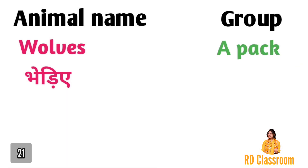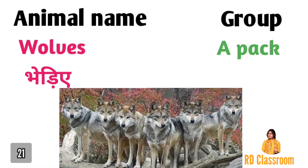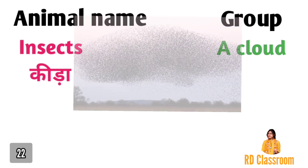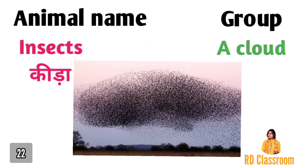Number twenty-one is wolf, jiske group ko kaha jata hai a pack. Number twenty-two is insects, ya fir kira, jiske group ko kaha jata hai a cloud.